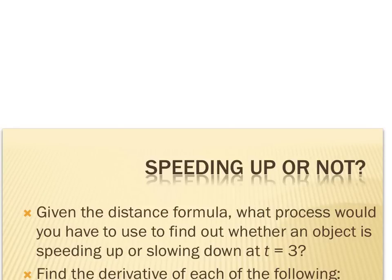The first question is: given the distance formula, what process would you use to find out whether an object is speeding up or slowing down at t equals 3? The trick is to realize that you can determine if an object is speeding up or slowing down by comparing the velocity and acceleration at that moment t equals 3.